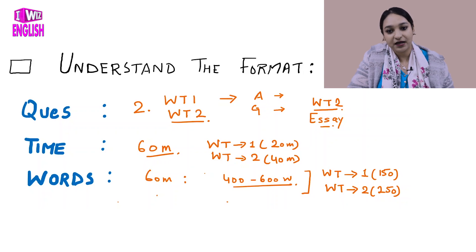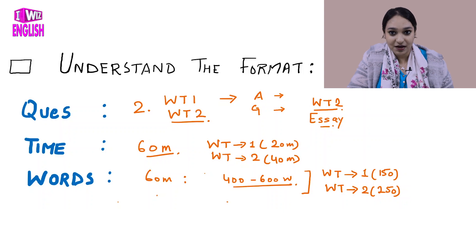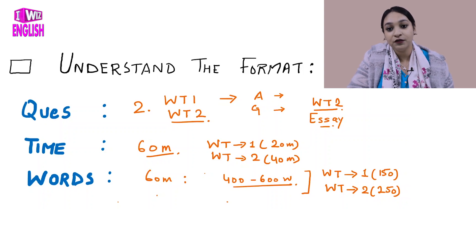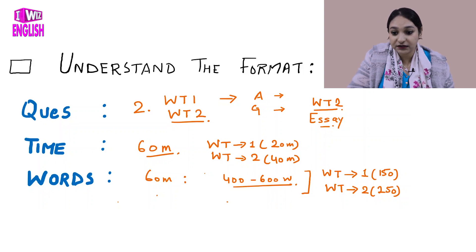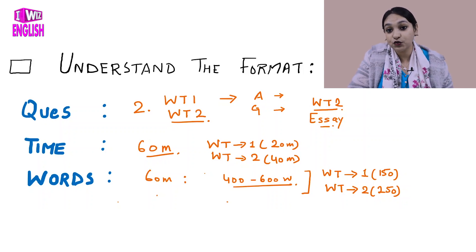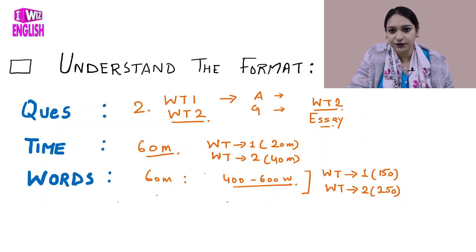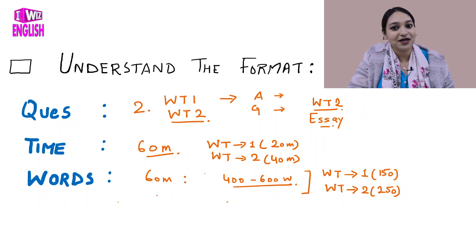If you give your answer in fewer words than stipulated, there is a high possibility that your marks will be cut. It is very important that you meet the minimum word count — 150 for Task 1 and 250 for Task 2. You can always increase these words: 150 to 200 for Task 1, and 250 to 350 for Task 2, though 150–200 and 250–300 is usually advisable.